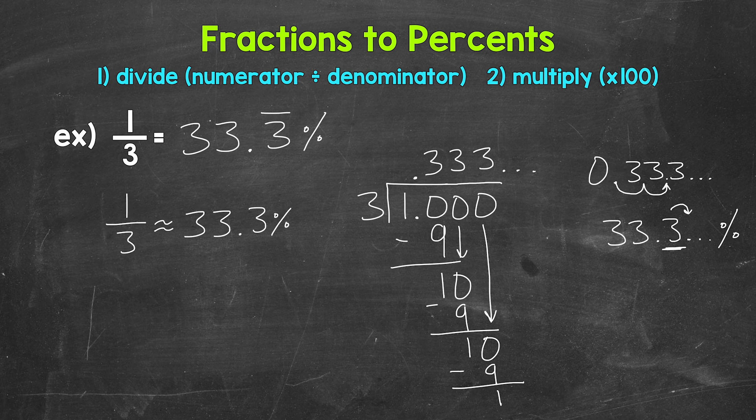Now let's round to the nearest whole percent. So we are going to round to the ones place. Does this round to 33 percent or 34 percent? One third is approximately. We have a three in the ones place with a three to the right in the tenths. So this rounds to 33 percent. One third is approximately 33 percent.